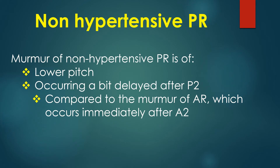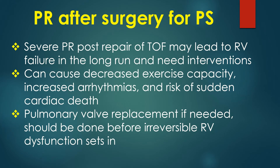The murmur of non-hypertensive PR is of lower pitch and delayed diastolic, occurring a bit delayed after P2, compared to the murmur of AR which occurs immediately after A2. Severe PR after repair of tetralogy of Fallot may lead to right ventricular failure in the long run and require interventions.